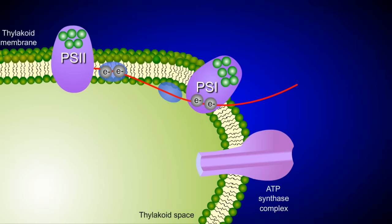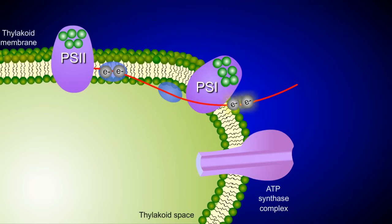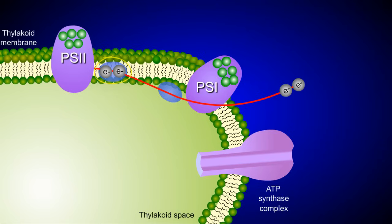Notice these electrons over here, where we left them at Photosystem 1. As Photosystem 1 absorbs additional light energy, the electrons again become energized, escaping Photosystem 1 and moving down the second electron transport chain. The electrons from the electron transport chain adjacent to Photosystem 2 replace those in Photosystem 1.